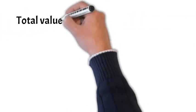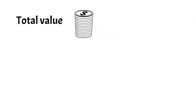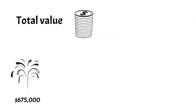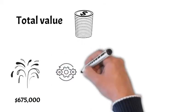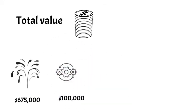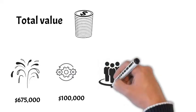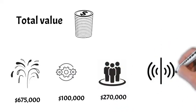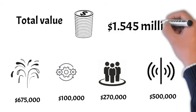Bringing all these together, the total value is $675,000 in water loss, plus $100,000 in operation cost, plus $270,000 in human resources efficiency, plus $500,000 due to early detection of faulty meters and telemetry malfunctions, totaling $1.545 million.